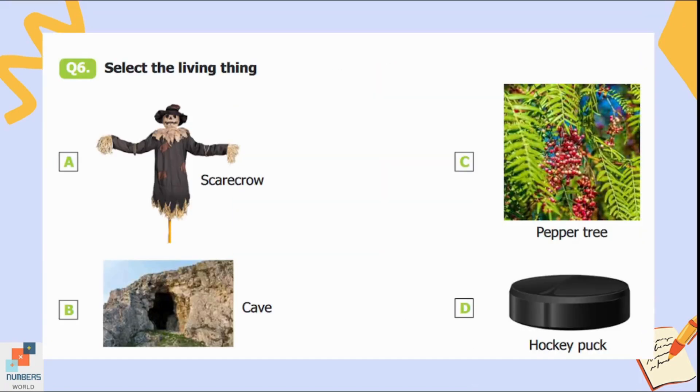Question number six: Select the living thing. Option A is scarecrow, B is cave, C is pepper tree, and D is hockey puck. We all know that plants are also living beings, so option C, pepper tree, is the correct answer.